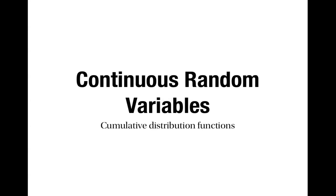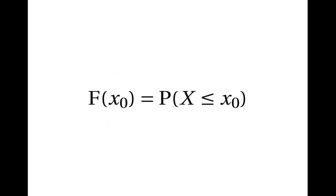This is a video about cumulative distribution functions for continuous random variables. The cumulative distribution function, almost always written with a capital letter F, is a function whose output is the probability that x is less than or equal to the input.